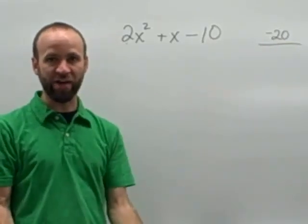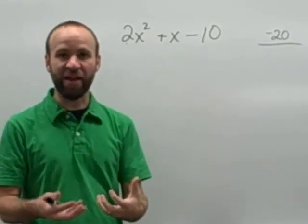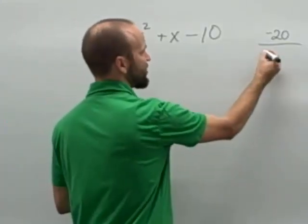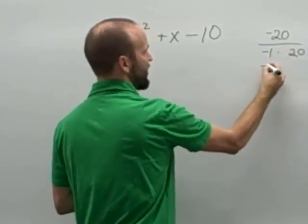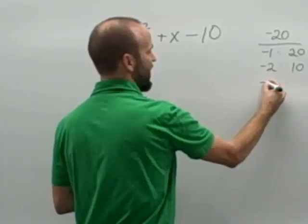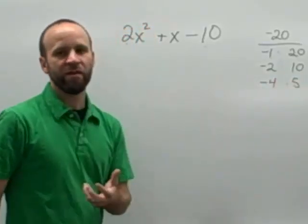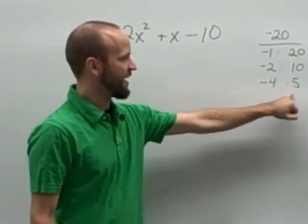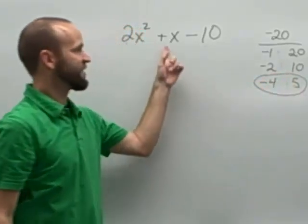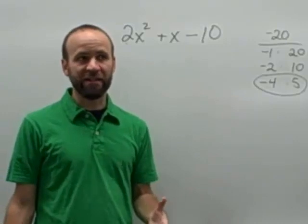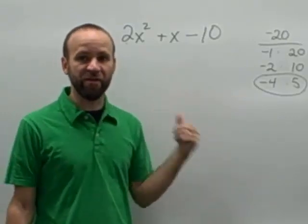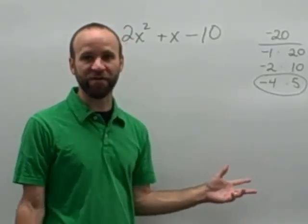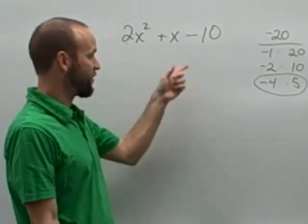If we want the sum to be positive, the positive factor should be larger than the negative factor. So our options are: negative 1 times 20, negative 2 times 10, or negative 4 times 5. The sum of negative 4 and 5 is positive 1, which happens to be our middle coefficient. Now here's where things get a little different. We're not going to say x minus 4 times x plus 5, because if you multiply that out, you won't get this.